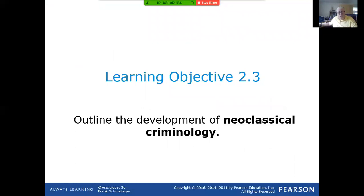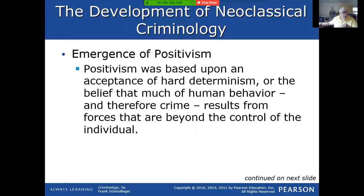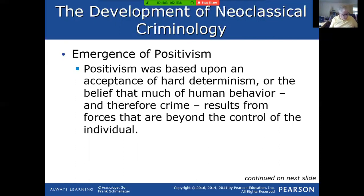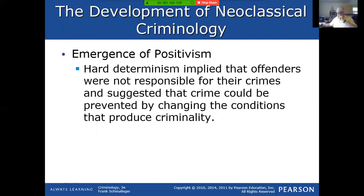Now, between classical and neoclassical, there was an emergence of something called positivism, based on an idea called hard determinism — a belief that people committed crimes because of things beyond their control. There was something biological or psychological going on within the person — they didn't make a decision per se. Positivism was all about the idea that the person didn't choose to commit a crime; something was going on, some very strong motivation that caused them to do it.